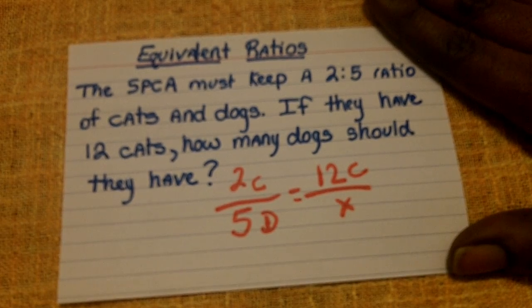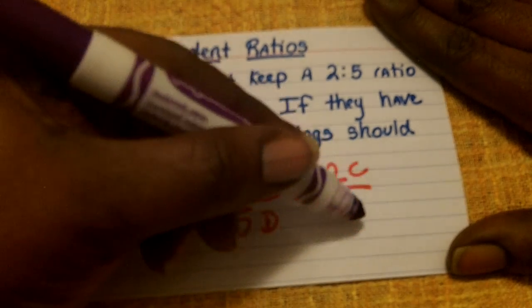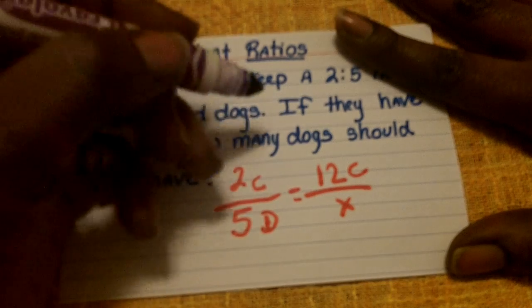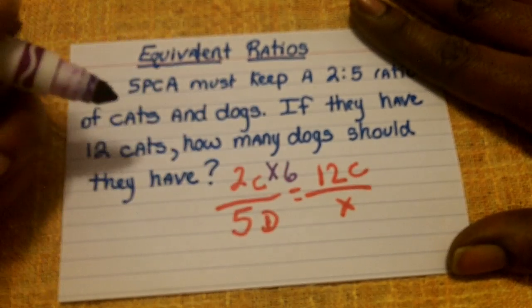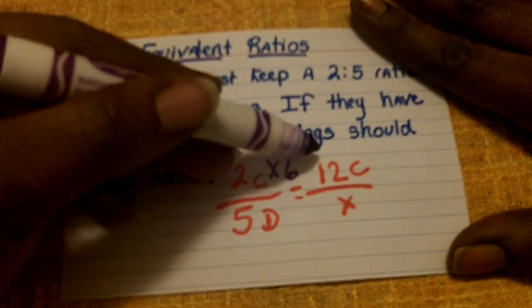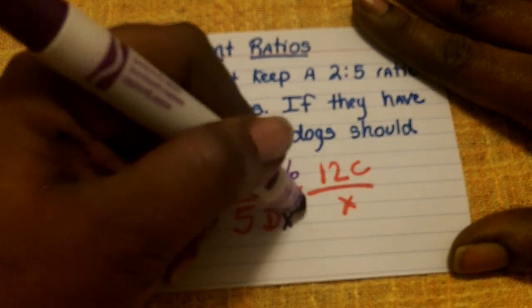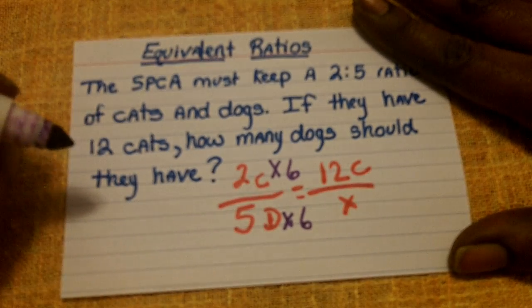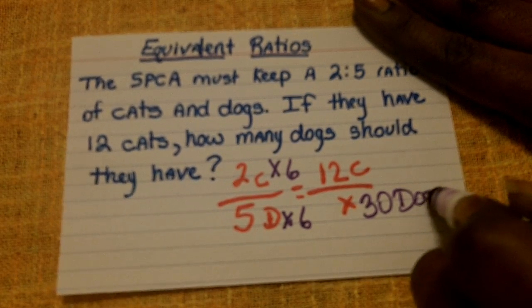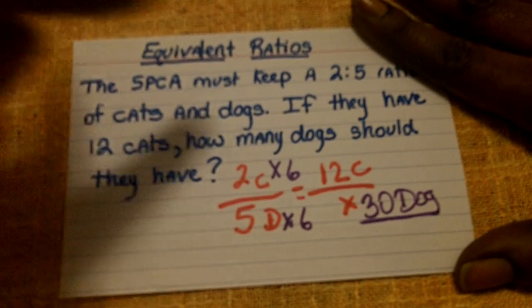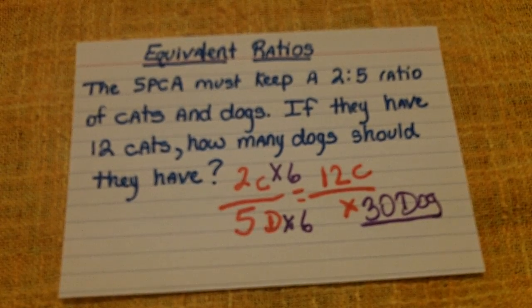If you look at the first ratio written like a fraction, we are comparing it to another ratio that will also be written like a fraction. But the numerators increased by multiplying by six. It was a two and then we multiply by six to get twelve. And since we multiply the numerator by six, you will also multiply the denominator by six to see that there must be a total of thirty dogs in order to keep the ratio of two to five.